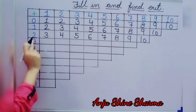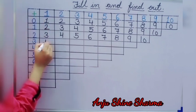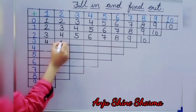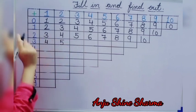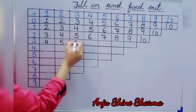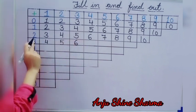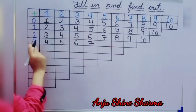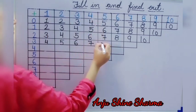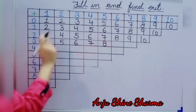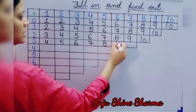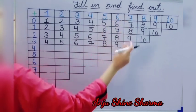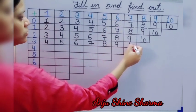Okay, then 3. 3 plus 3 is equal to 9. Then 3 plus 4 is equal to 10. 3 plus 5 is equal to 8. 3 plus 6 is equal to 9. Then 3 plus 7 is equal to 10. 4 plus 6 is equal to 10.